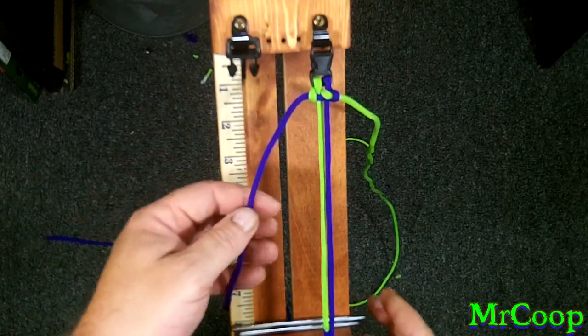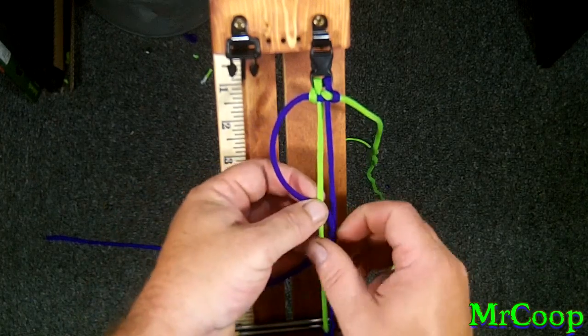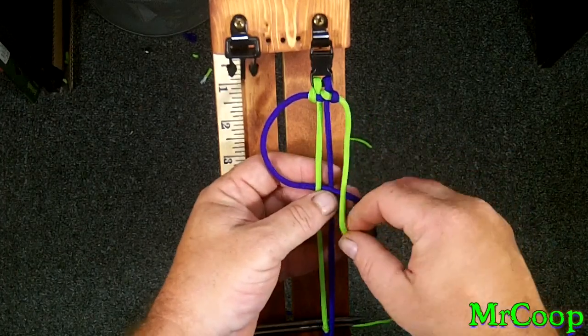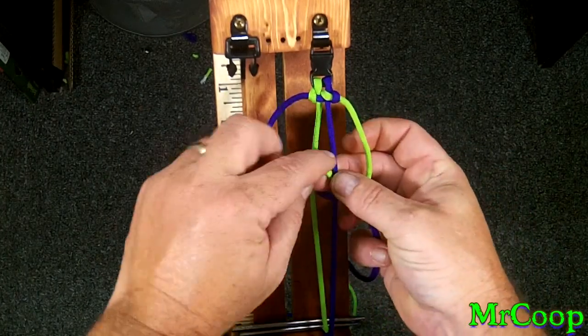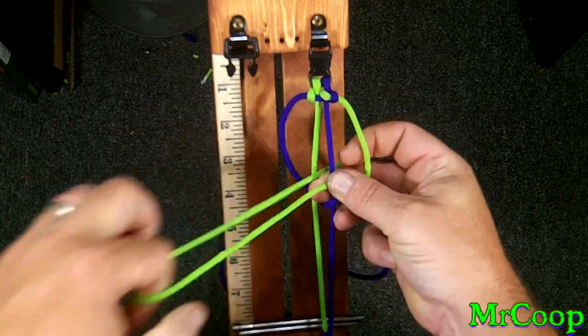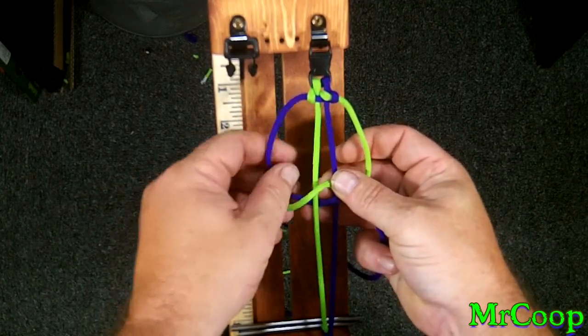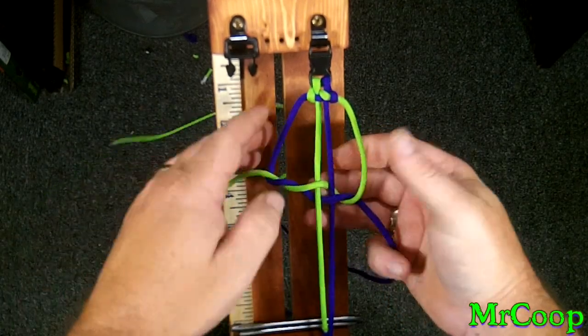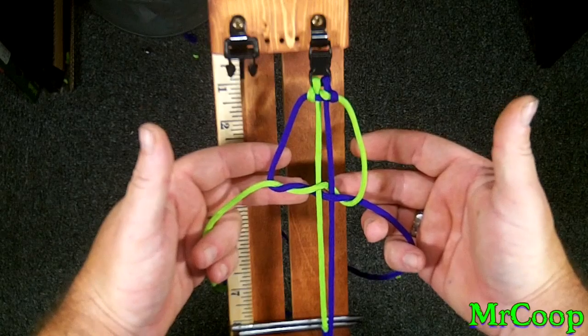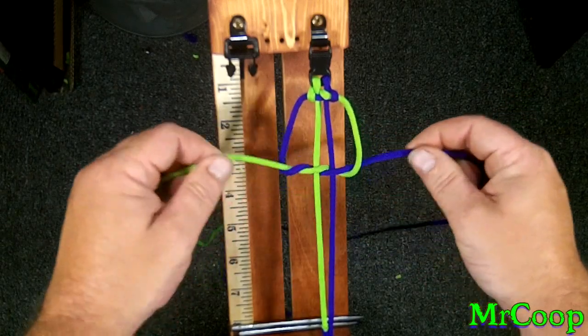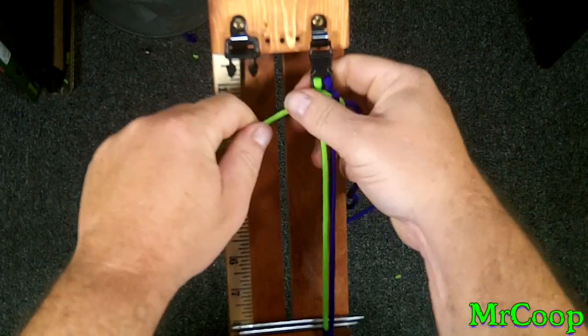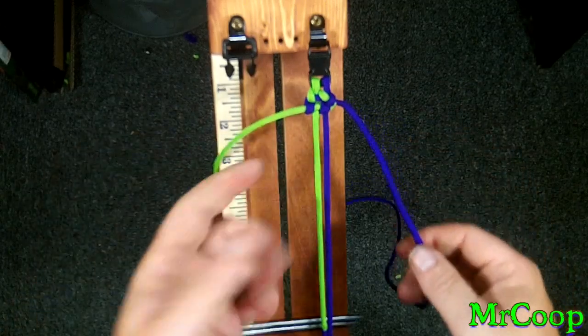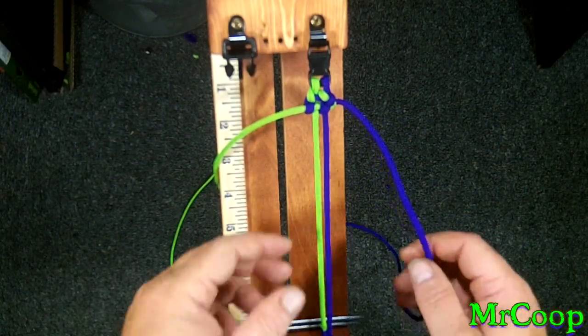Now we reverse the process. Take the purple, go through the middle, out the other side. Take the green, go over the top of the purple, through the middle of the two cores, out the other side. Loop it through the purple loop. Should look just like that. And we just tighten it up. Pull the green, pull the purple. Now I'm going to do two more with you, then we're going to pause till we get to the end.